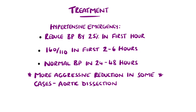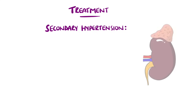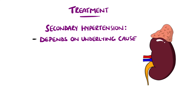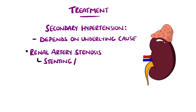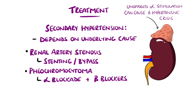Labetalol is often the first line agent in hypertensive emergency. The treatment for secondary hypertension is dependent on the underlying cause — for example stenting or bypass in renal artery stenosis. In pheochromocytoma there is initially medical therapy with alpha blockade and then beta blockers. This is necessary as beta blockers alone would leave the alpha receptors free to be bound by the excessive adrenaline, which can precipitate vasoconstriction and a hypertensive crisis. Following this it is usually surgically excised.